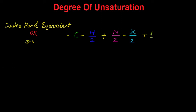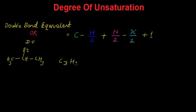Let us take one example. We can write the structure like this — CH₃Br. We can write the molecular formula of this compound, that is C₃H₇Br. From this molecular formula we can calculate the double bond equivalence. Double bond equivalence is equal to — we have to apply the same formula here.